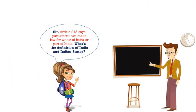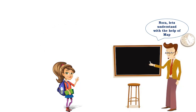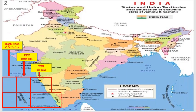Article 245 says Parliament can make law for the whole of India or part of India. What is the definition of India and Indian states? Let's understand with the help of a map. You can see on the map that India also includes sea. So India is not only land — some part of the sea is also part of India. You can see the area marked as number 1. This is called Indian Territorial Water. From the baseline, 12 nautical miles of sea is Indian territorial water. This means it is India's part.